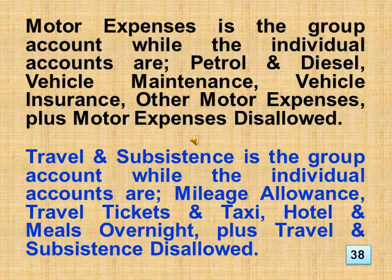Motor expenses is the group account while the individual accounts are: petrol and diesel, vehicle maintenance, vehicle insurance, other motor expenses, plus motor expenses disallowed. Travel and subsistence is the group account while the individual accounts are: mileage allowance, travel tickets and taxi, hotel and meals overnight, plus travel and subsistence disallowed.